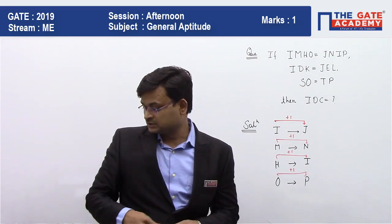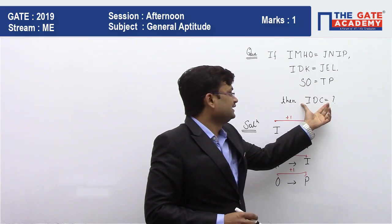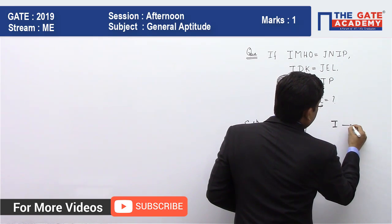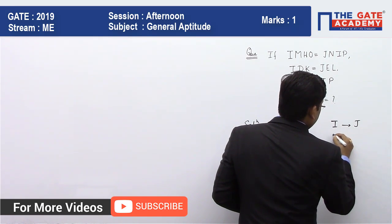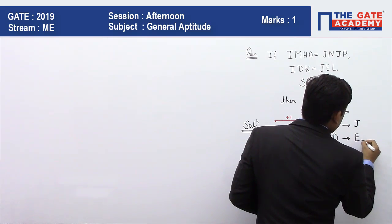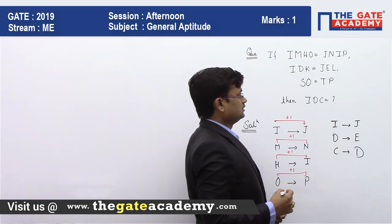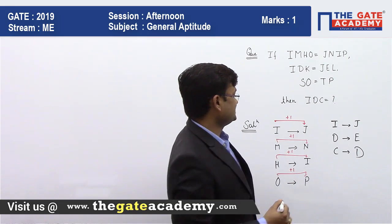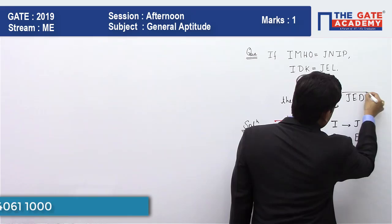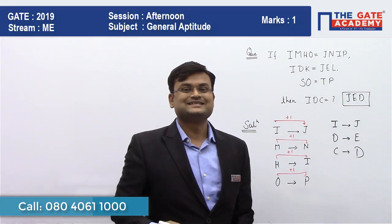So on the same principle, we have to find the coding for IDC. I maps to J, D maps to E, and C maps to D. So the answer will be JED.